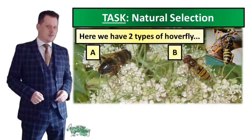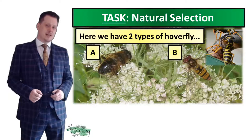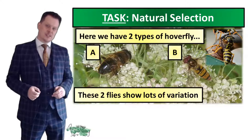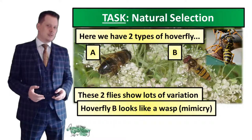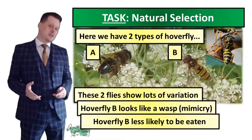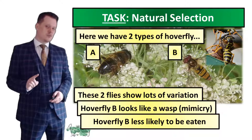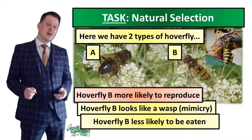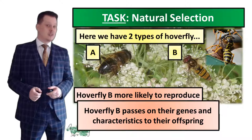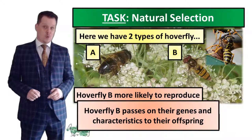Let's have a look at our hoverfly answer. The first thing we need to say when answering a natural selection question is that there is a lot of variation within the same species. Hoverfly B was more like a wasp — this is something we refer to as mimicry. Because our hoverfly predator doesn't eat wasps, hoverfly B is less likely to be eaten and more likely to survive. Hoverfly B is then more likely to reproduce, and will pass on its genes and characteristics to offspring, so more hoverfly offspring will end up looking more like wasps.